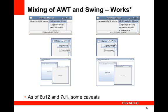Mixing of AWT and Swing components. There are two types of graphical components in the Java programming language: heavyweight and lightweight. A heavyweight component is associated with its own native screen resource — all AWT components are heavyweight. A lightweight component has no native screen of its own and relies on screen resources from an ancestor in the containment hierarchy. Swing components like JButton and JLabel are all lightweight.